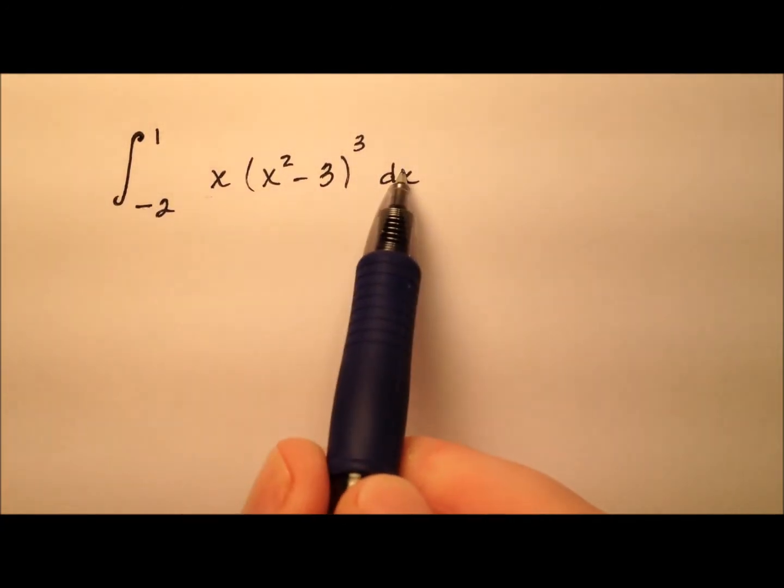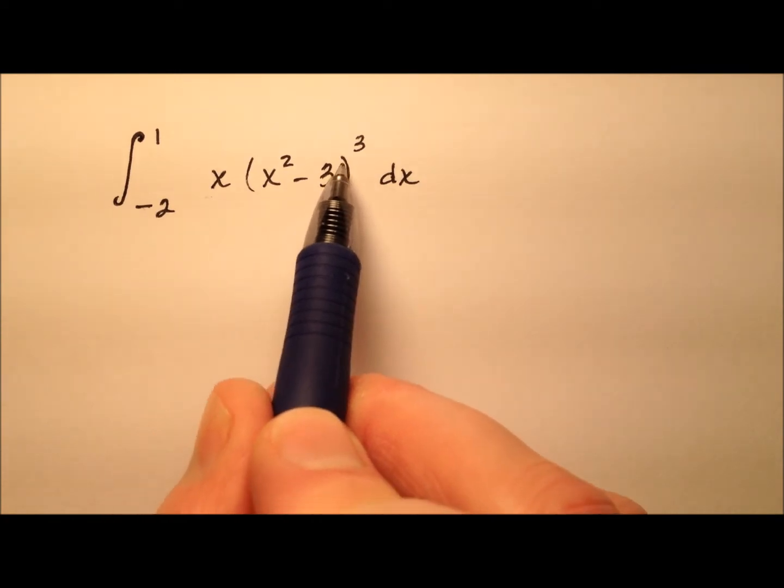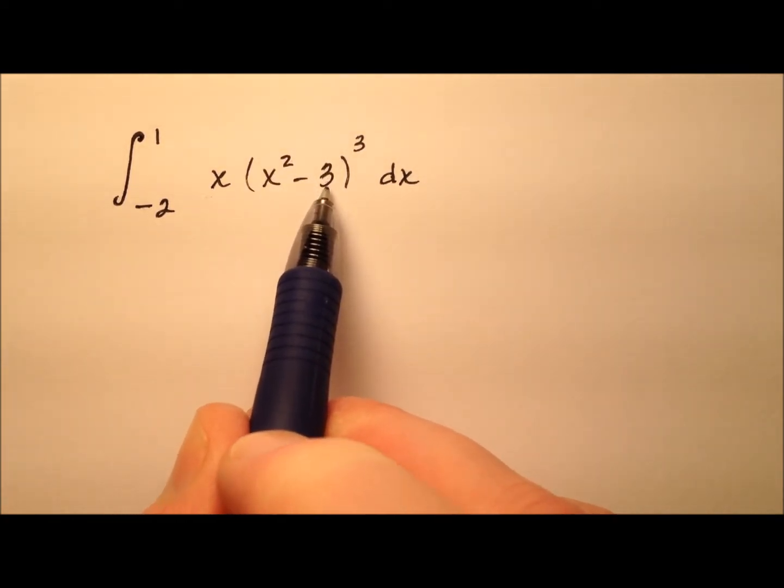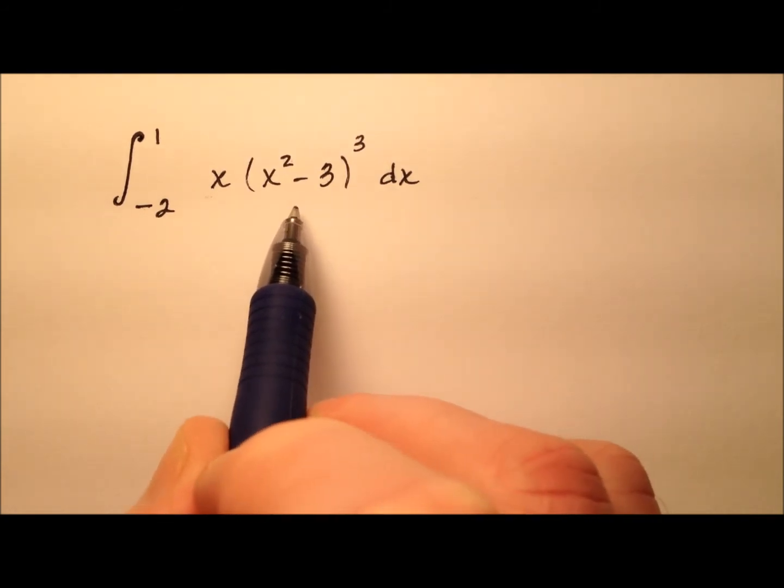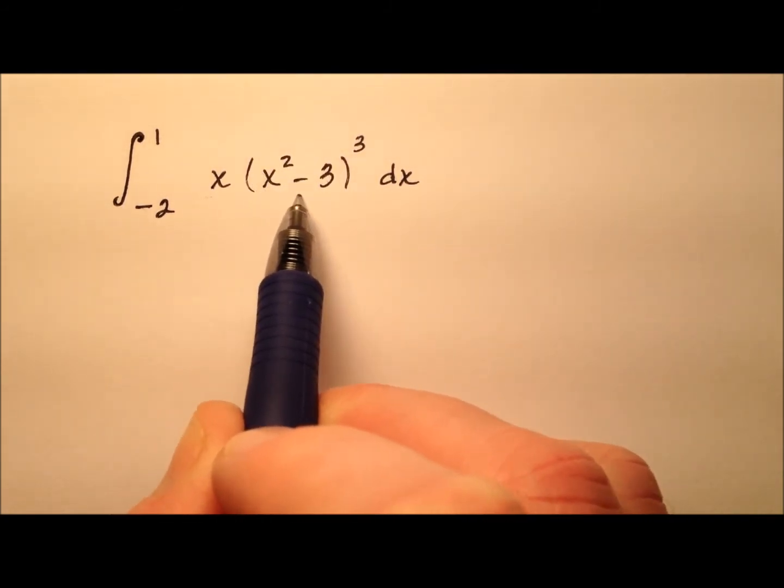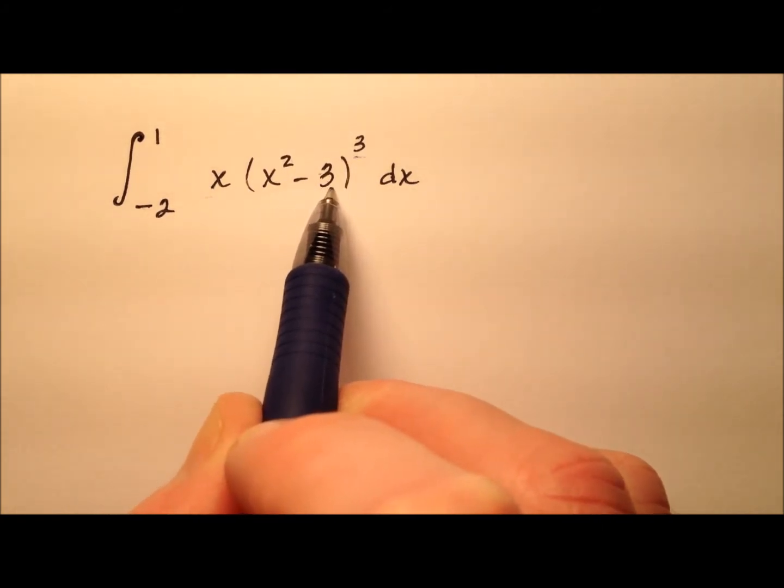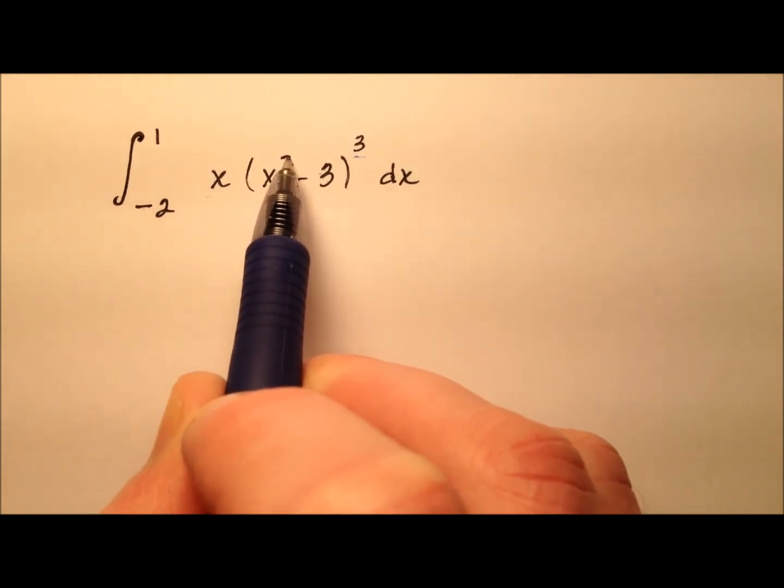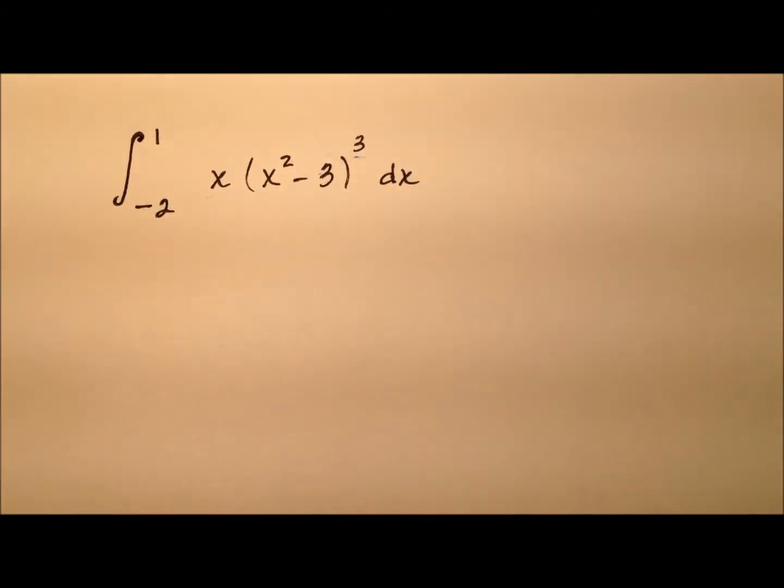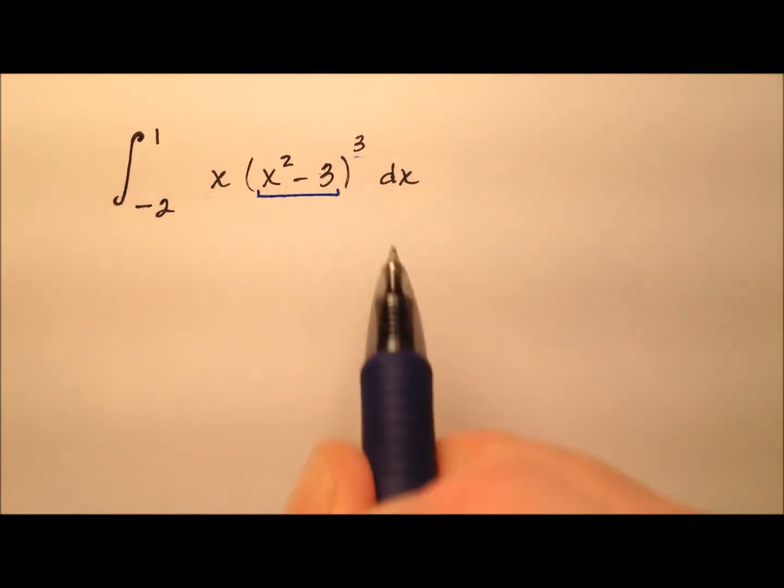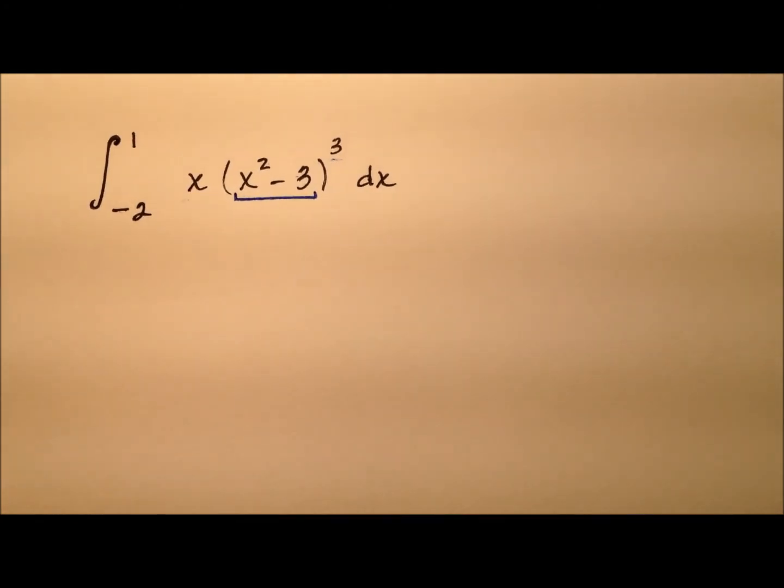Looking at this, it seems like we have a great candidate for a u substitution right here, our x squared minus 3. A couple of reasons why I think that. First of all, because you have this quantity in here which is to a higher power. Also, when I consider the derivative of x squared minus 3, it'll be 2x, and the x's will cancel, and that's nice. So let's go ahead and use this x squared minus 3 for my value of u.